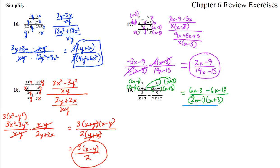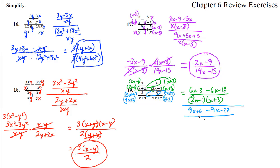Now let's do the bottom fraction. Common denominator: we'd have to times by 3x plus 2 on the bottom and the top, and this one would have to have x plus 3 and x plus 3. The top of this bottom fraction: 3 jumps in and we get 9x plus 6. Don't forget this minus 9 when it jumps in, giving minus 9x minus 27, over x plus 3 times 3x plus 2.